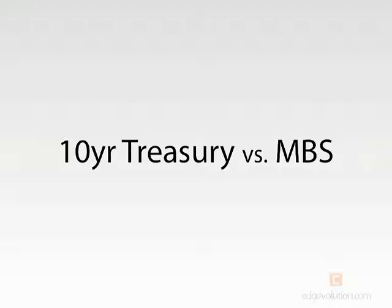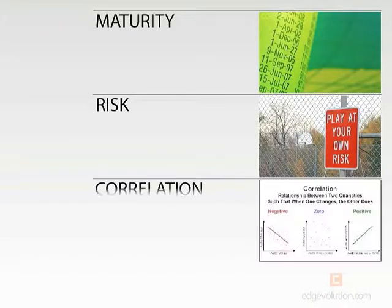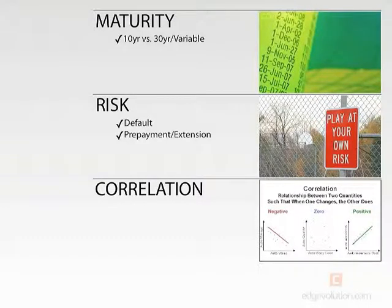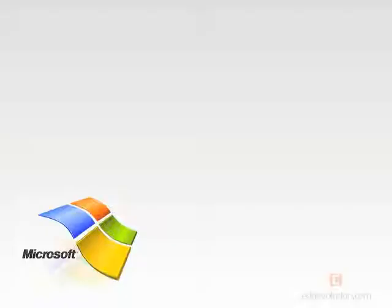Depending upon what you read and where you look, people will say the 10-year treasury is the preferred index for monitoring where mortgage rates are headed. But we find that flawed because there is a huge difference between the 10-year treasury and mortgage-backed securities. In fact, there are three big differences: maturity, risk, and correlation. We find that the 10-year treasury and mortgage-backed securities oftentimes diverge — when one is going up, the other, more often than not, is going down.